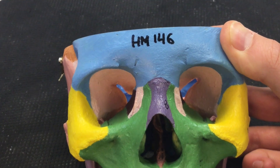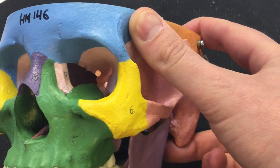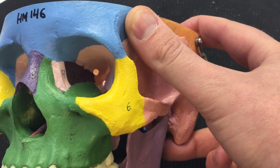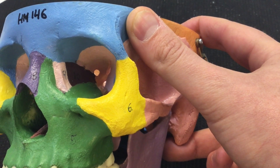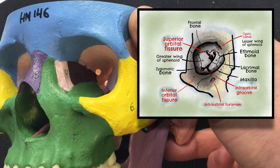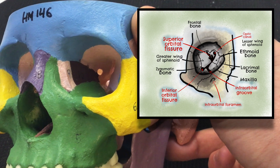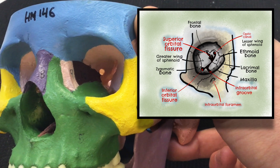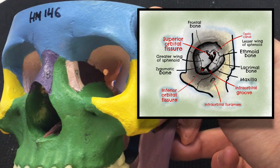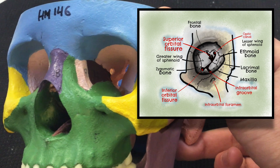If we look closely at the orbit, we can see it's actually very complex — it's made up of a number of different bones. Here is the opening of the optic canal, which is a big hole in the skull where the optic nerve travels through. If you want to study the orbit in more detail, a graphic is coming on screen now — you can pause the video and look at the individual bones that make up the orbit and the key foramina involved.